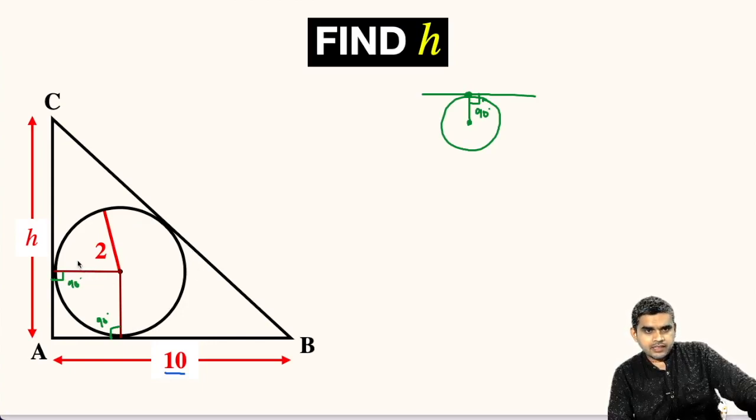After this we see that the radii of this circle is 2 units. This will be 2 units, this will be 2 units and the opposite angles are 90 degree. So we can say that this figure formed, this quadrilateral formed is a square.